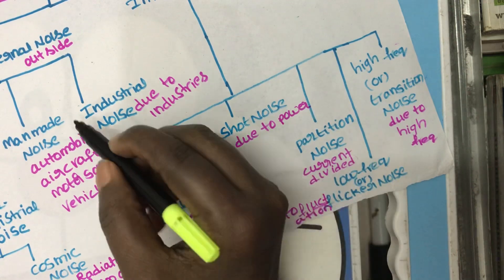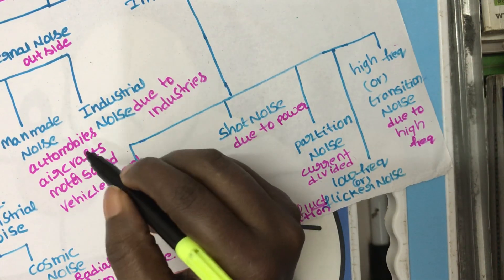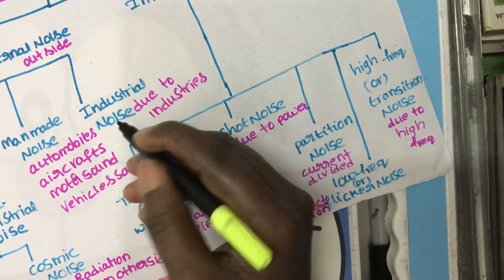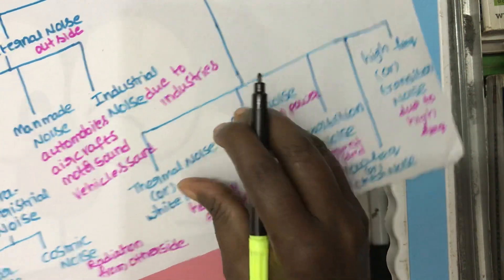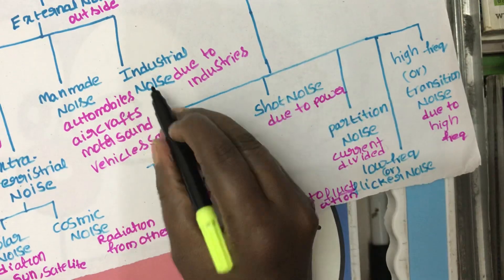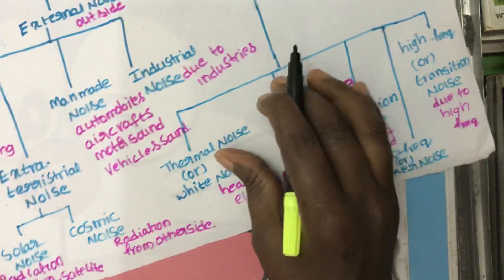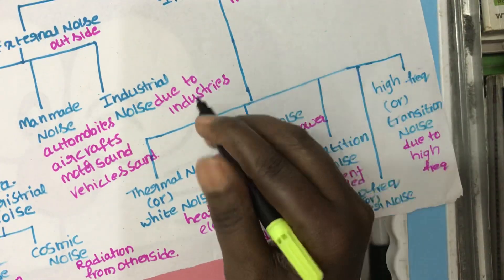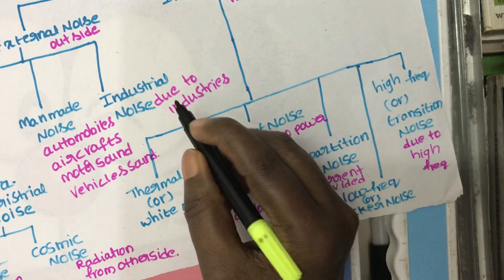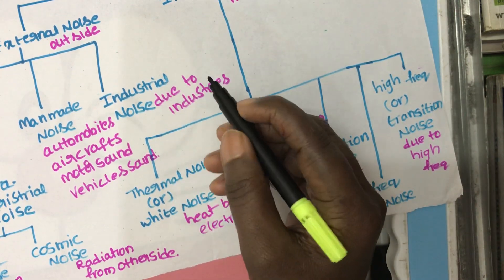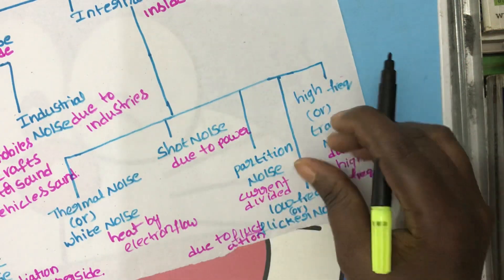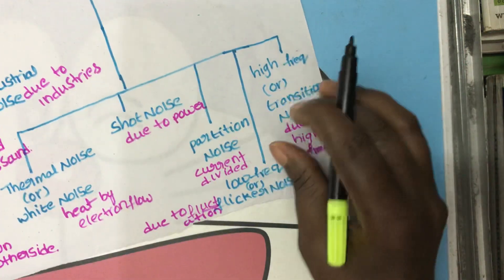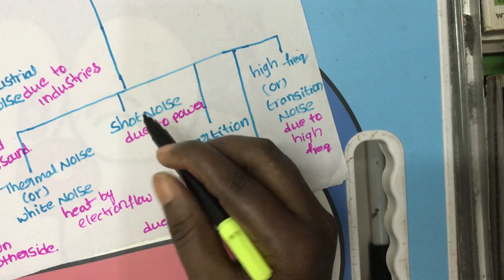Man-made noise: these noises are due to human mistakes like automobiles, aircrafts, motor sounds, vehicle sounds, etc. Industrial noise: this noise is produced due to industrial emissions.